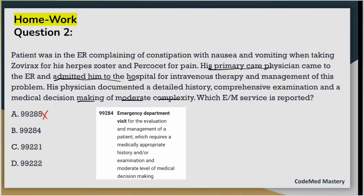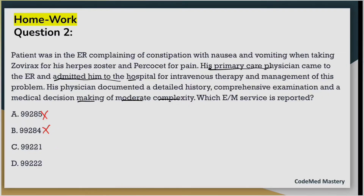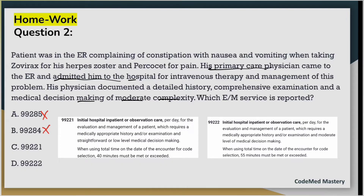Option B, 99284, is also for emergency department visit E&M requiring MDM of moderate complexity. But since the patient is admitted, we cannot code 99284 — eliminate it. Coming to options C and D: 99221 and 99222 are for initial hospital inpatient or observation care per day. 99221 is for low-level MDM and 99222 is for moderate-level MDM. Our question specifies moderate MDM, so we code 99222 and eliminate option C. Option D, 99222, is the right answer.